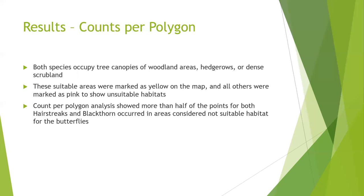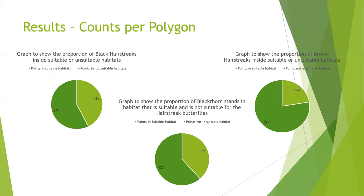The other analysis I performed was counts per polygon. Both species occupied tree canopies of wooded areas, hedgerows and dense scrubland. These suitable areas were marked as yellow on the map and all others were considered unsuitable habitats, marked as pink. The counts per polygon analysis showed that more than half of the points for both hairstreak and blackthorn occurred in areas considered not suitable habitat for the butterflies. 57% of the black hairstreak sightings were in habitats not considered suitable, and 78% for the brown. For the blackthorn, 62% of the plants were in not suitable habitats for the butterflies.